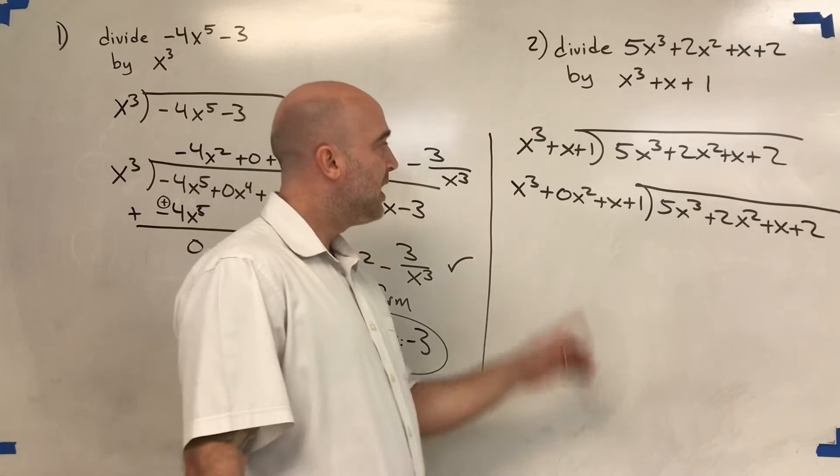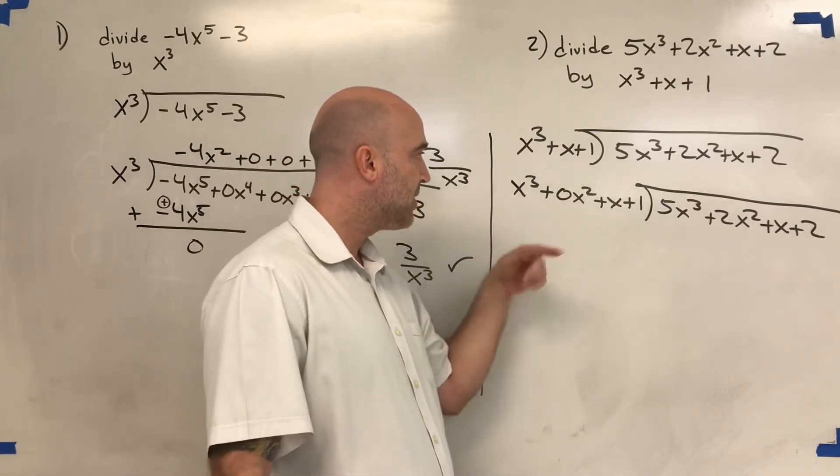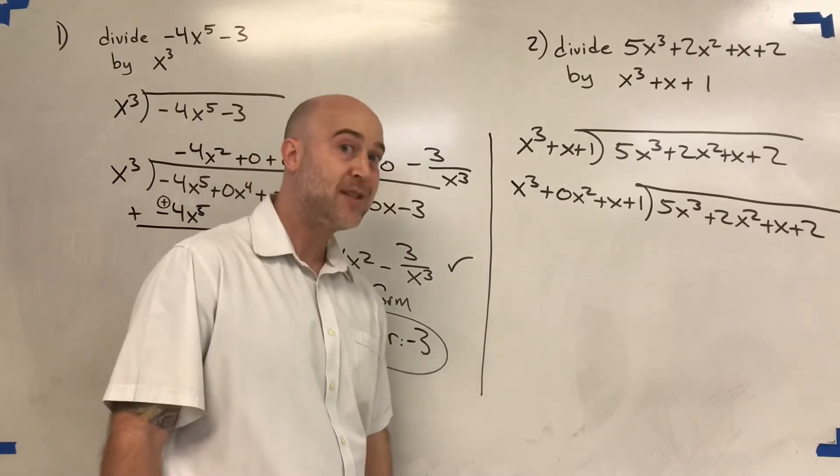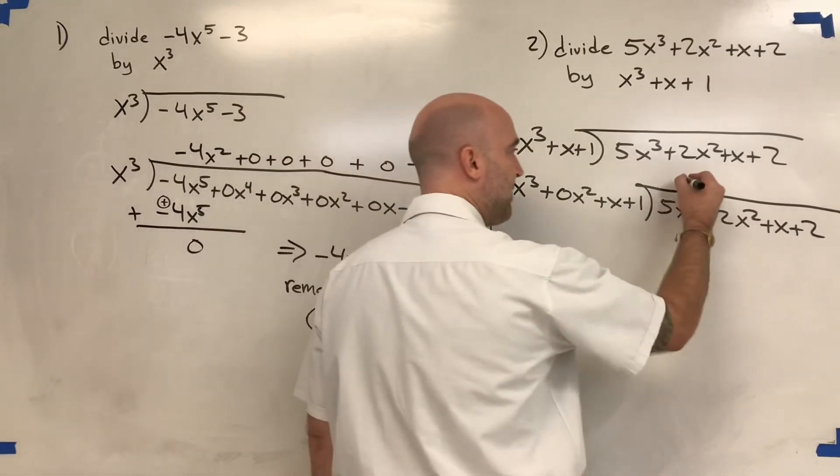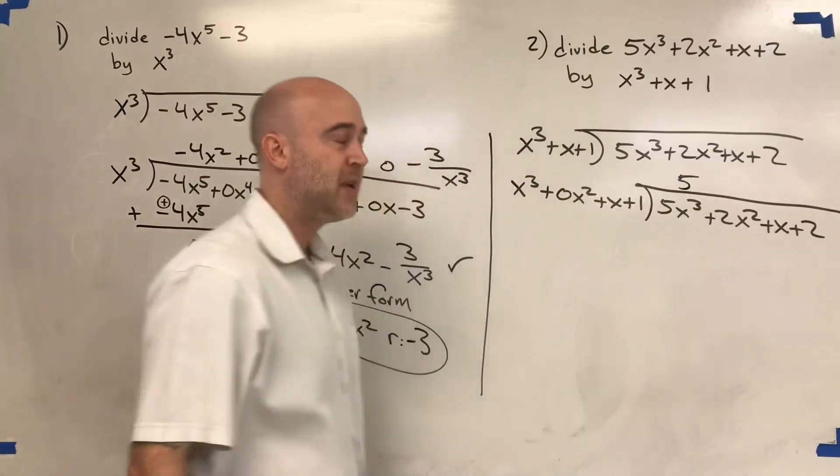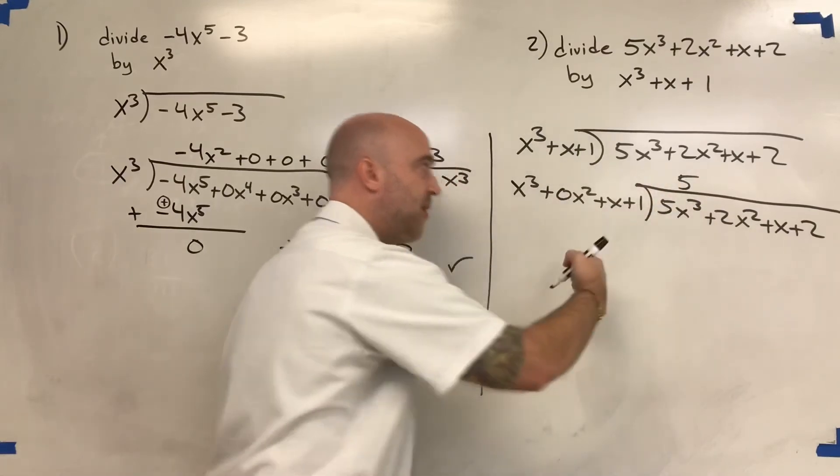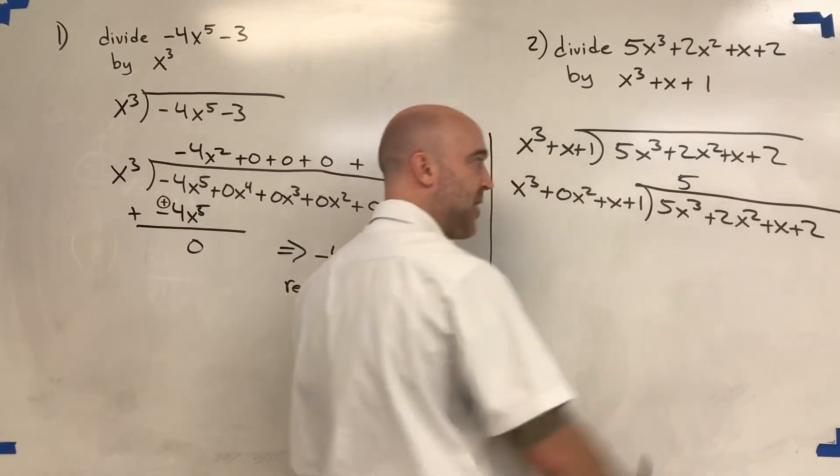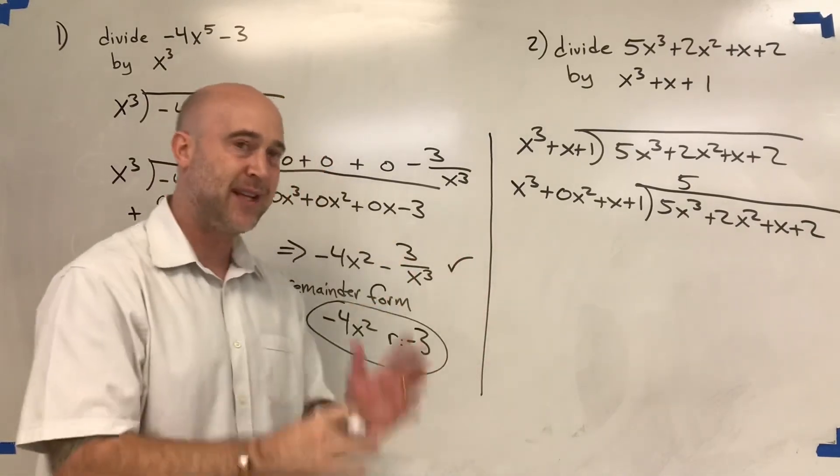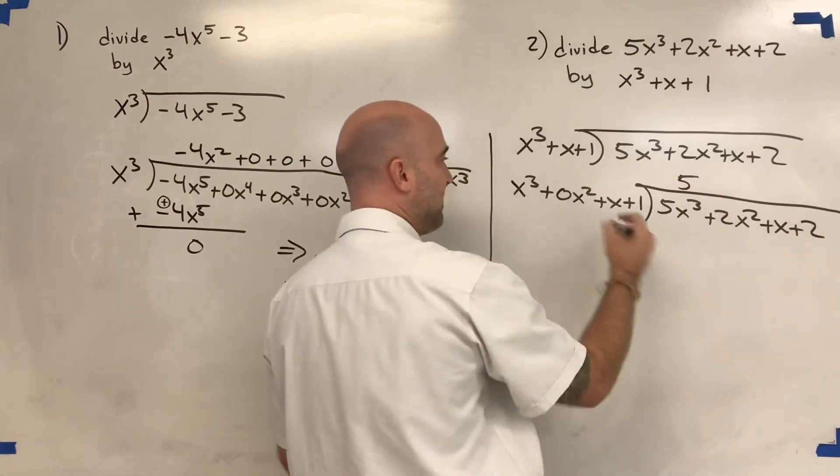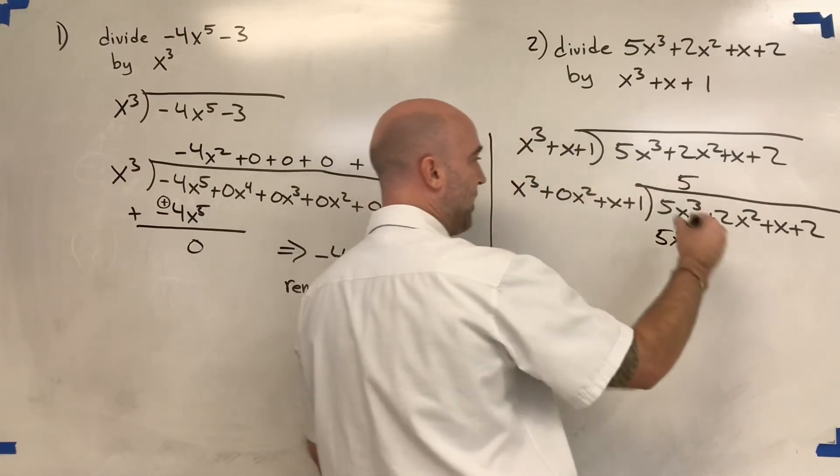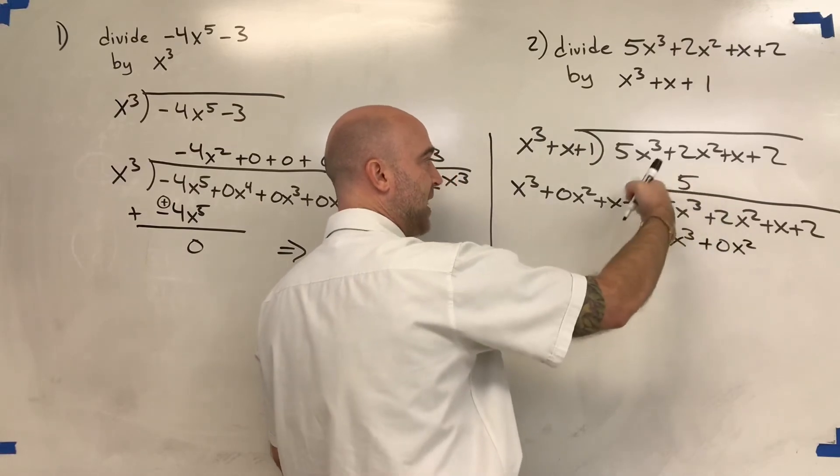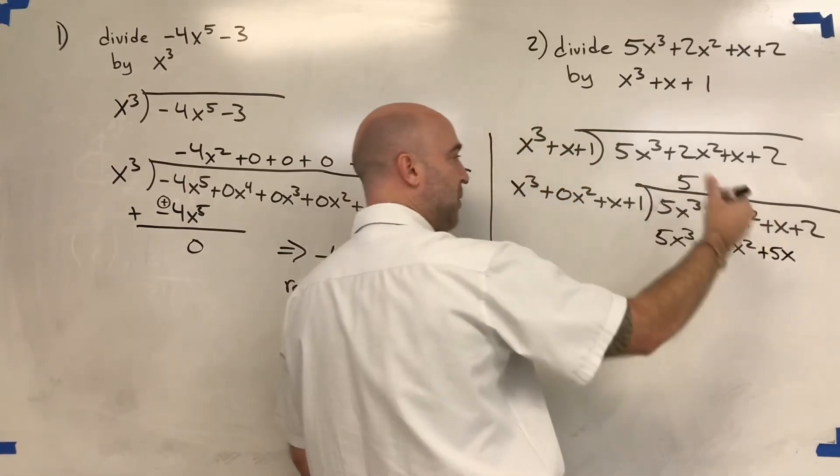All right, so same game is we look at the leading term, the leading terms. And I would say x cubed times what is 5x cubed? x cubed times what is 5x cubed? x cubed times 5. 5 times x cubed is 5x cubed. So then we just go ahead and multiply everything through this whole polynomial by that 5. And that's why we had to have that placeholder so that it links together with what's left. So you don't have anything that doesn't link together when you're using placeholders. So 5 times x cubed is 5x cubed. 5 times 0x squared is 0x squared. And notice it links together. That's why we did that. 5 times x is 5x. And 5 times 1 is 5.